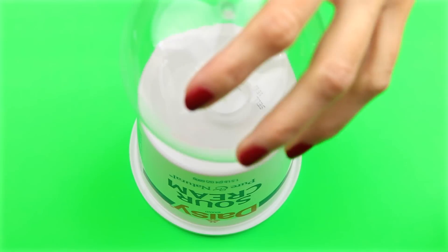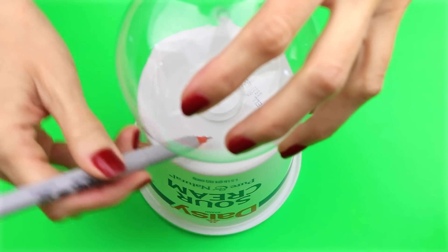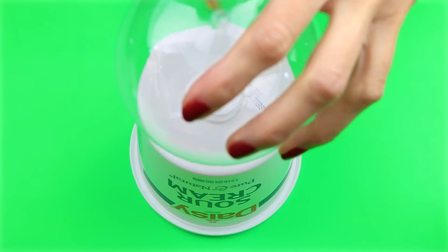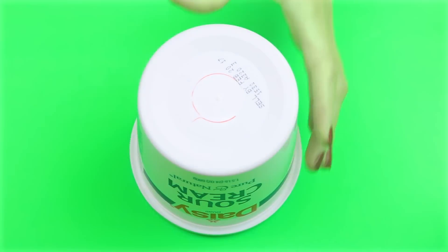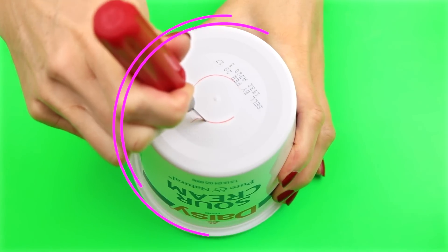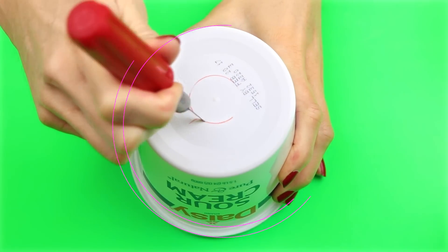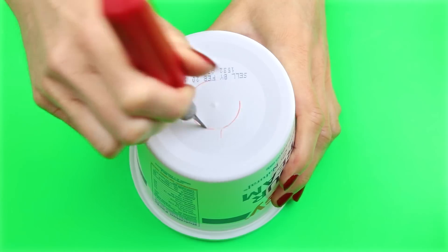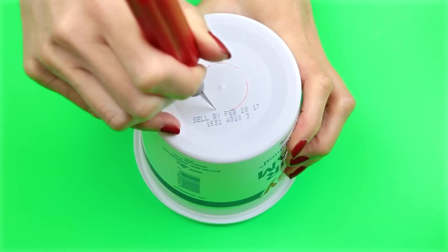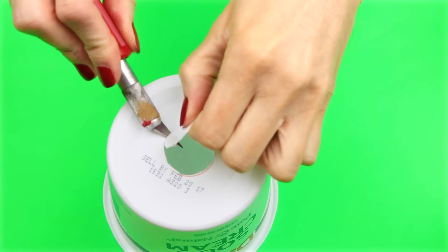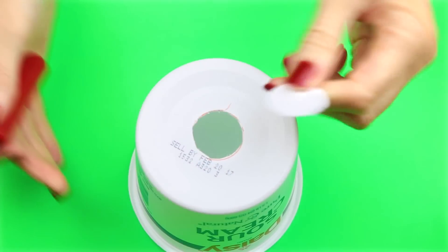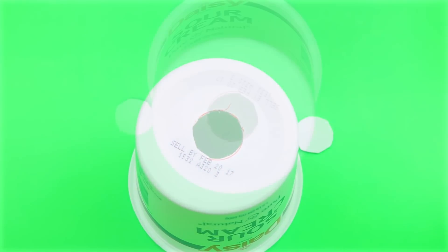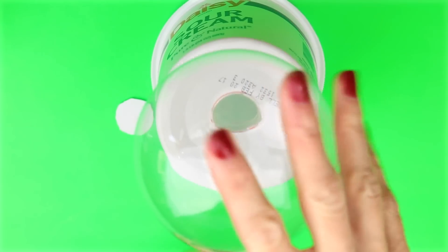Flip the container over, place the ornament in the center and trace around it. Using an X-Acto knife I cut out the circle. The ornament should fit tightly in the hole.